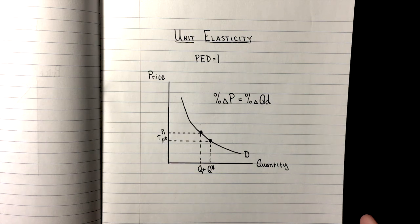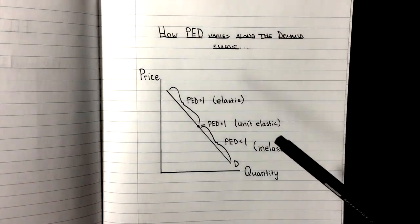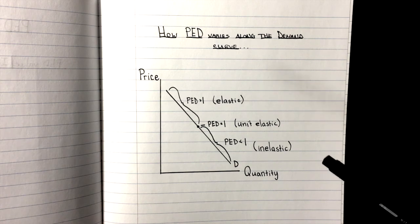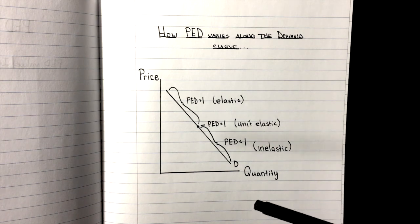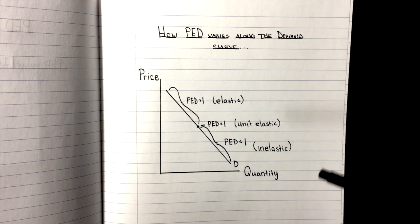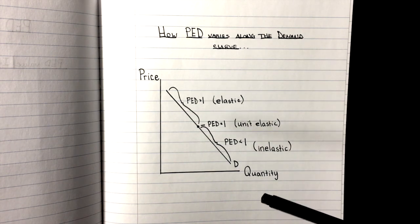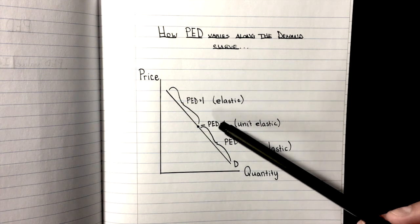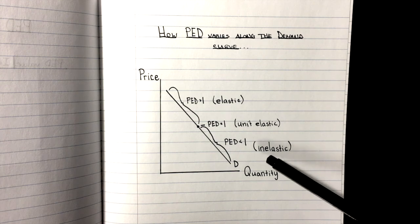Now one other thing to consider is the fact that on a demand curve, you might actually see all three elasticities from elastic to inelastic on one demand curve. And this portion above the midpoint is going to have an elastic elasticity. Then at the midpoint it is equal to one and below the midpoint it is going to be inelastic.